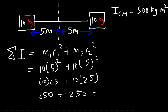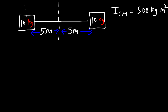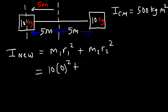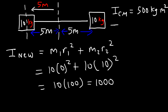Now, what is the inertia of the system if we move the axis of rotation to the center of the 10 kilogram mass — that is, 5 meters to the left? The new inertia is the sum of the moment of inertia for each object using the same equation. M1 is still 10, but R1 is 0 because the first mass is directly at the axis of rotation. The second mass is 10 meters away, so 10 squared is 100, and 10 times 100 is 1000. The new inertia is 1000 kilogram times square meters.